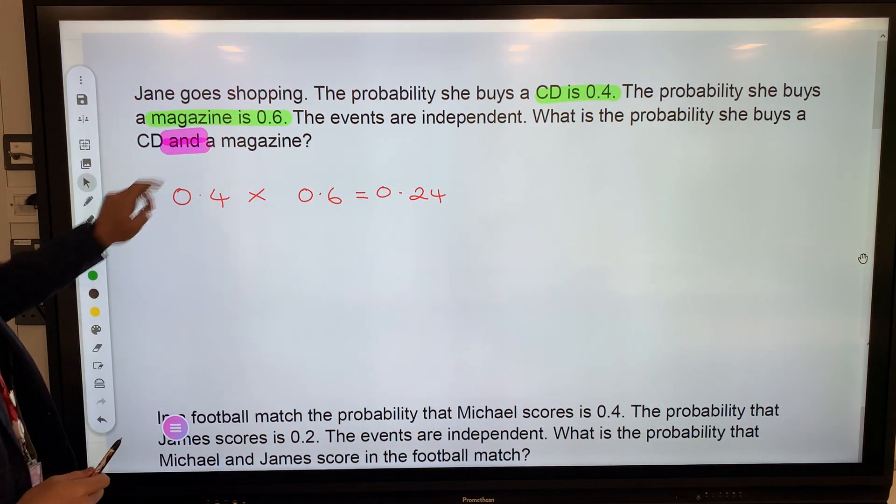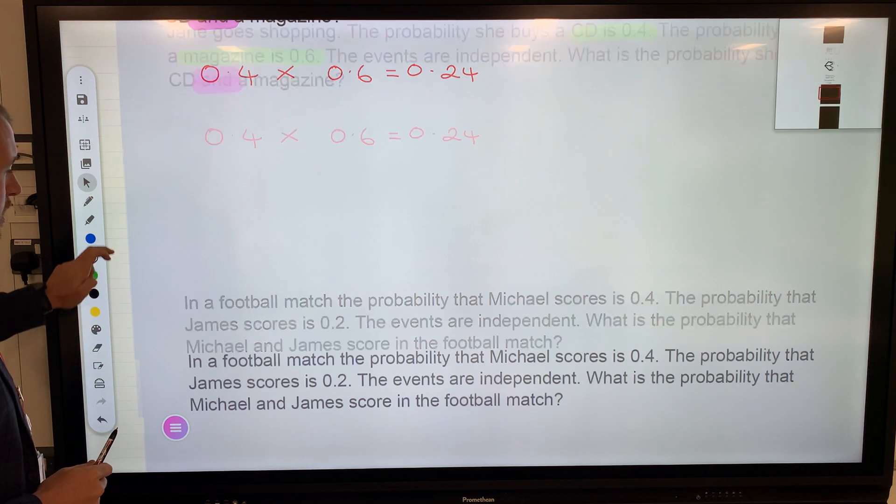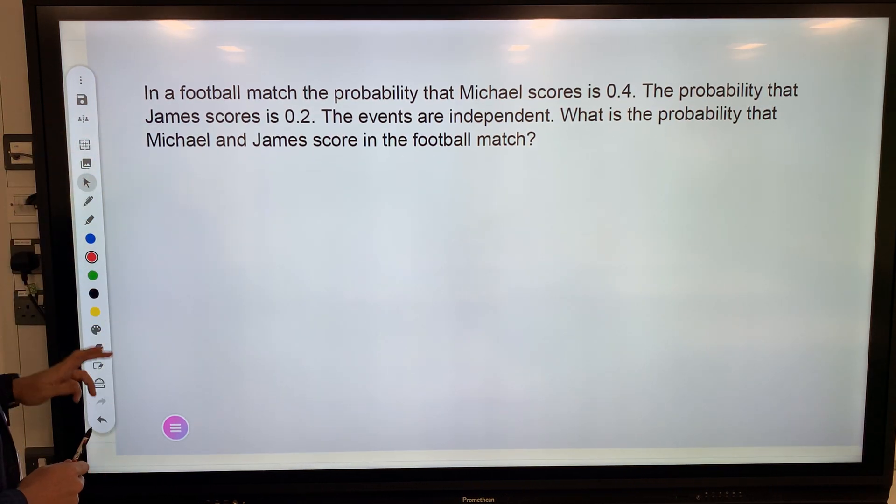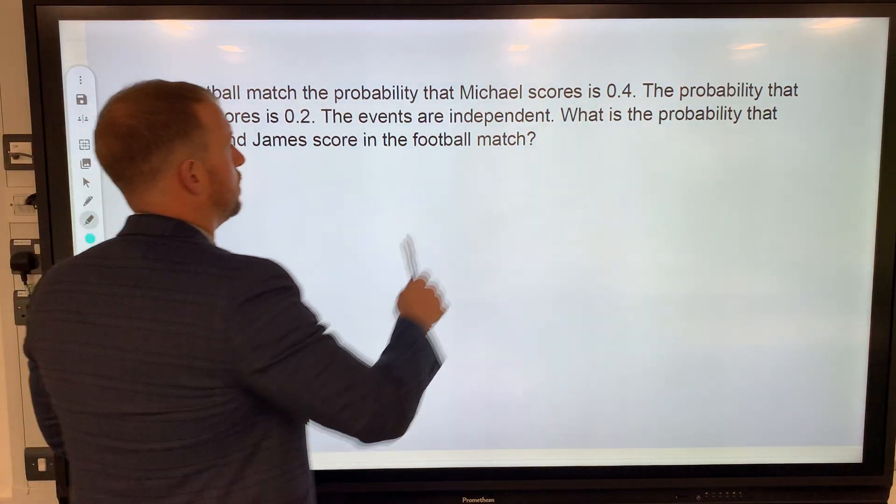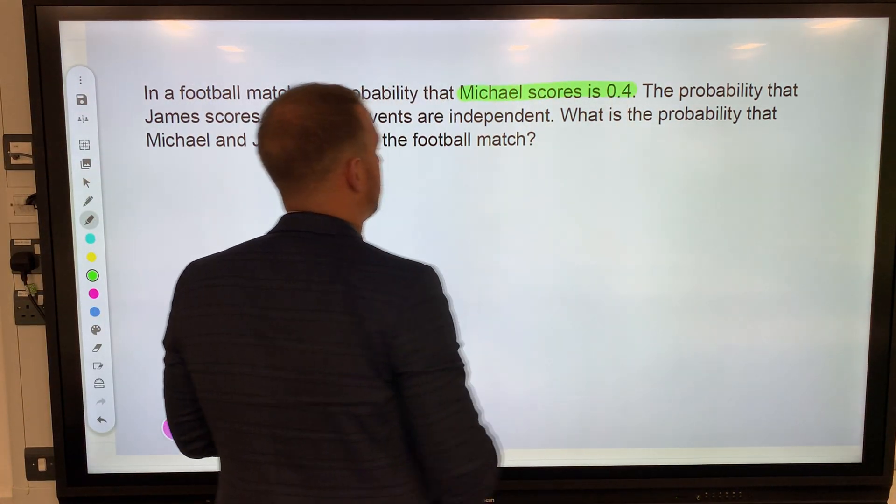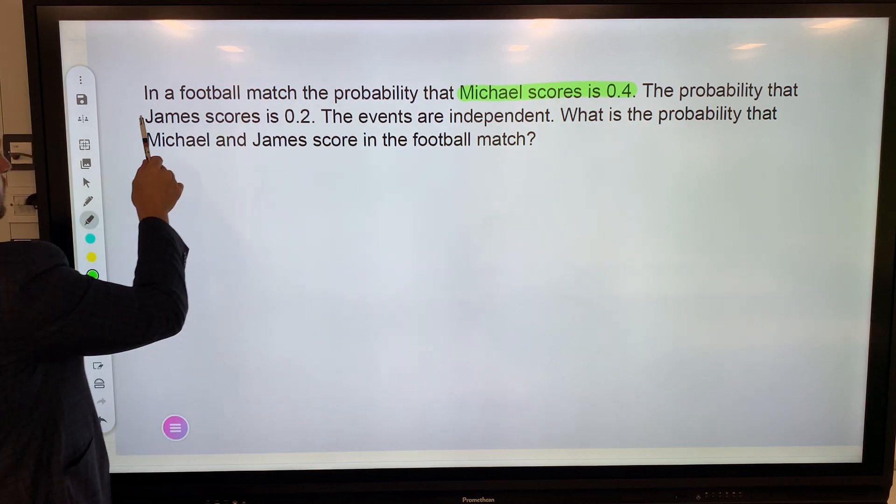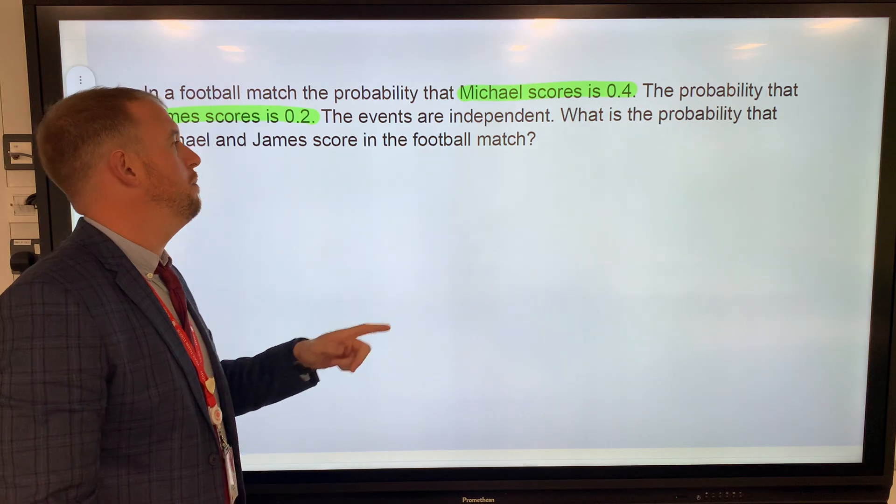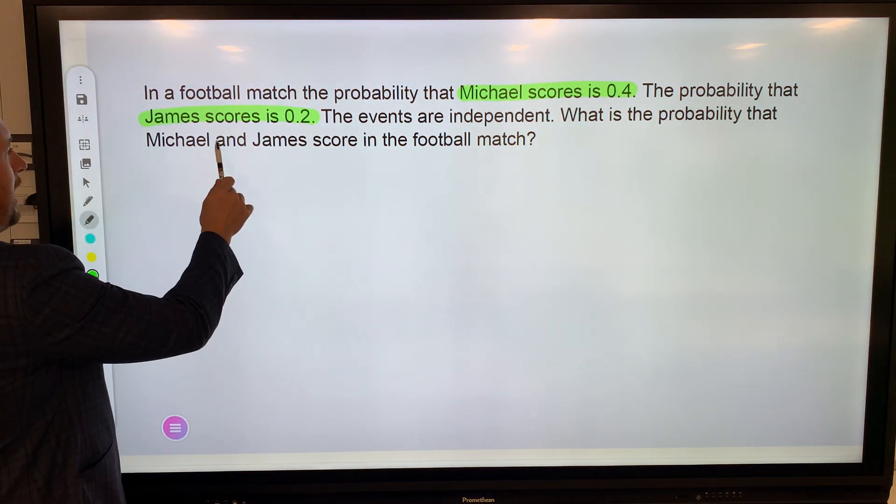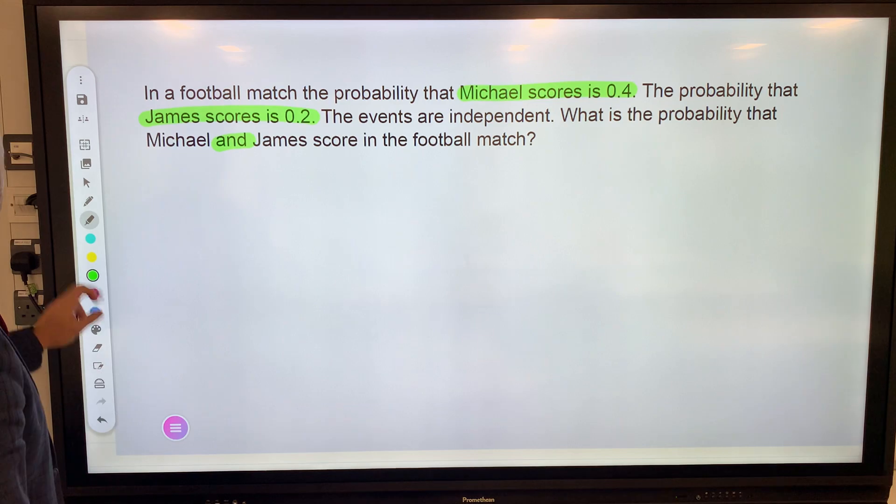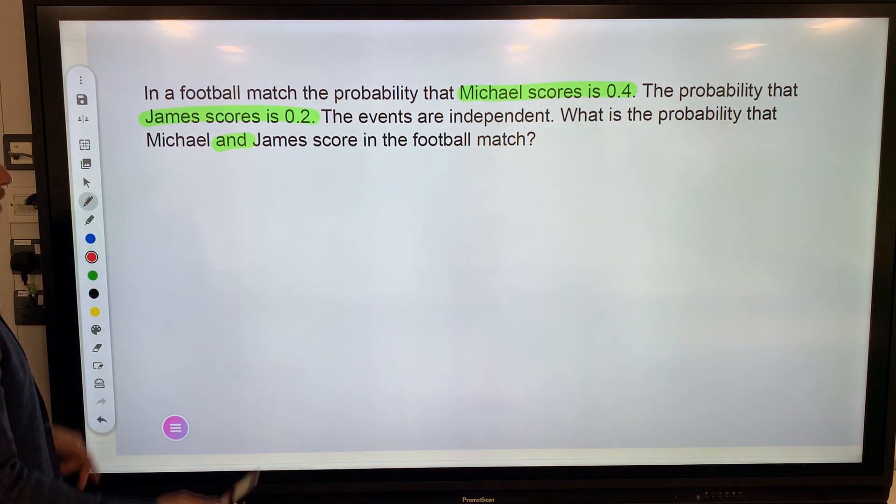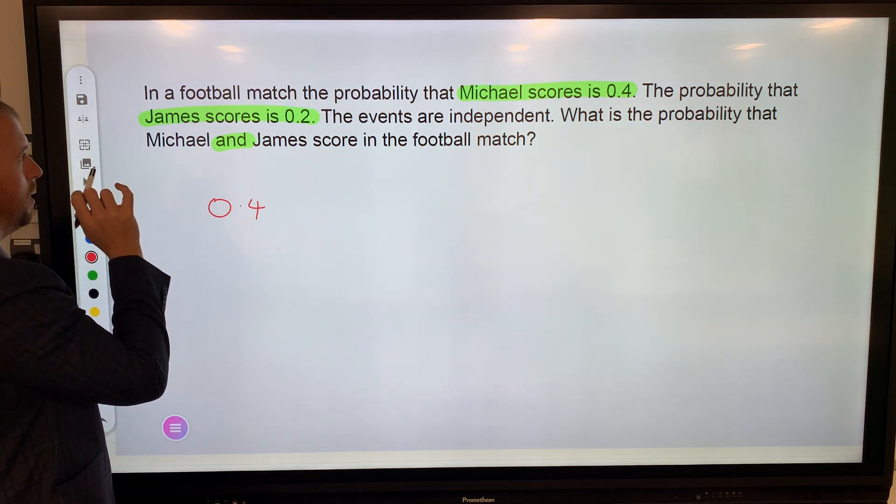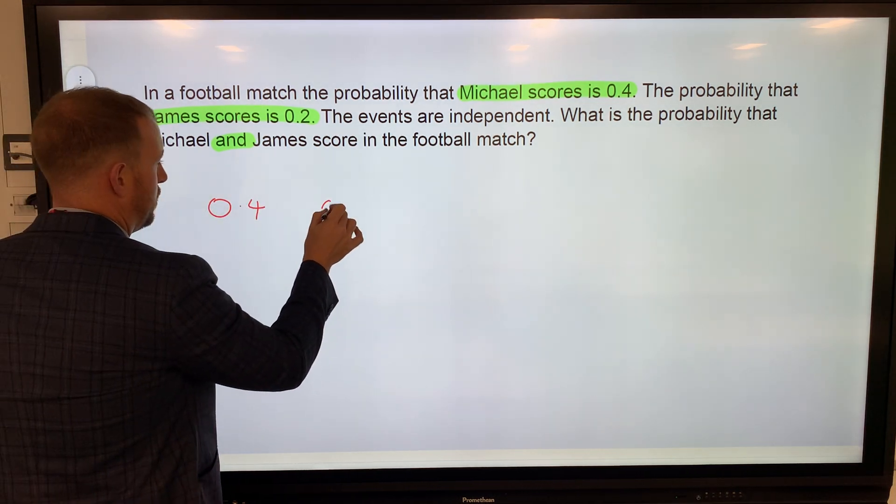Second question: In a football match, the probability that Michael scores is 0.4 and the probability that James scores is 0.2. These events are independent again—they're separate. What's the probability that Michael and James score in the football match?